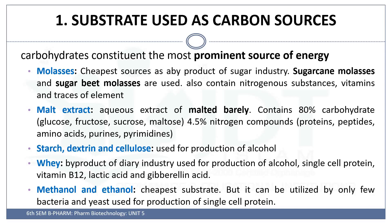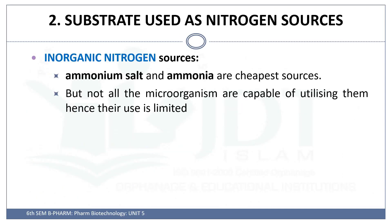Another carbon source is malt extract — malted barley containing 80% carbohydrate, 4.5% nitrogen compounds, then starch, dextrin, and cellulose — used for the production of alcohol. Whey, which is the by-product of the dairy industry, is used for the production of alcohol, single-cell protein, vitamin B12, lactic acid, and gibberellin. Methanol and ethanol are the cheapest substances produced by the fermentation process and are also used as carbon sources in fermentation.